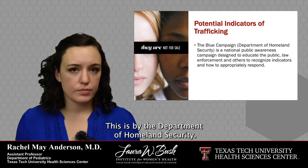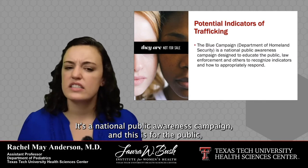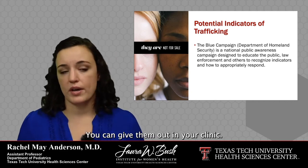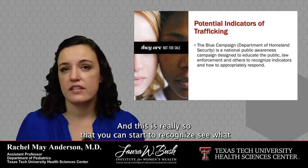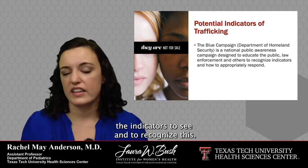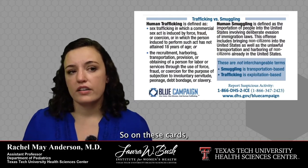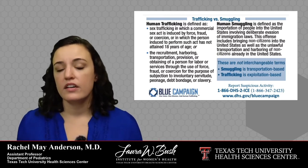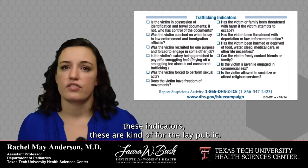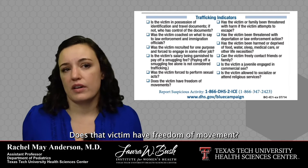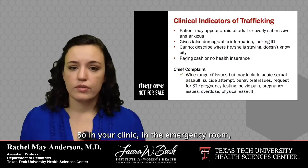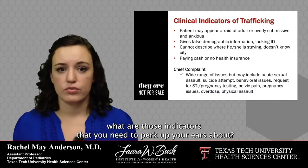The Blue Campaign from the Department of Homeland Security is a national public awareness campaign for the public, law enforcement, and others to help recognize indicators. You can go to their website and get cards to hand out in your clinic or to family and friends. On these cards it talks about the difference between human trafficking and human smuggling: smuggling is transportation-based while trafficking is exploitation-based. What I want to talk about are the clinical indicators — in your clinic or the emergency room, what are those indicators that you need to perk up your ears about?